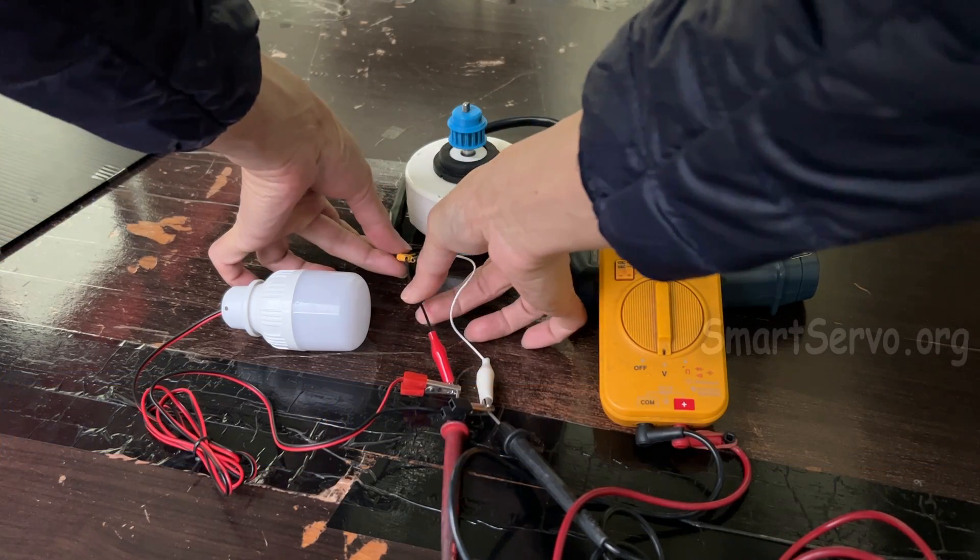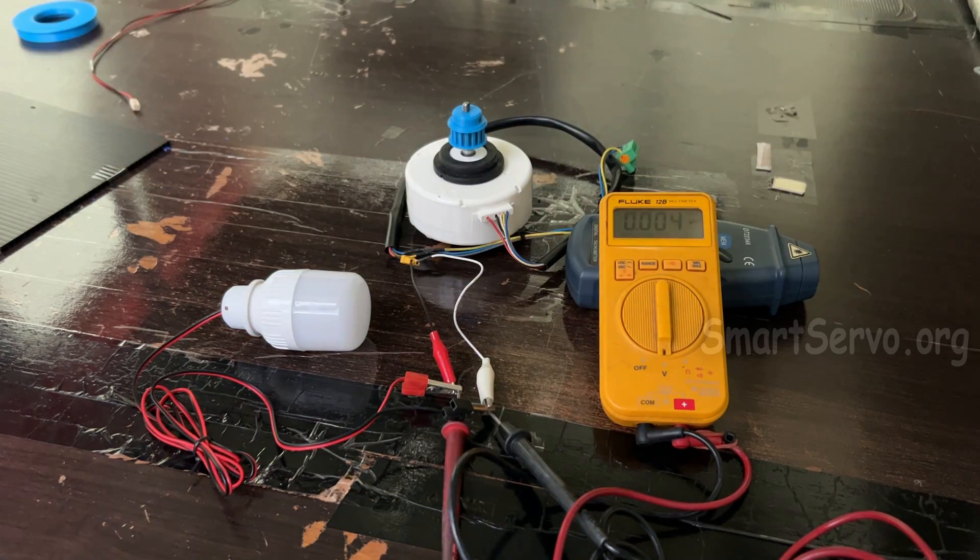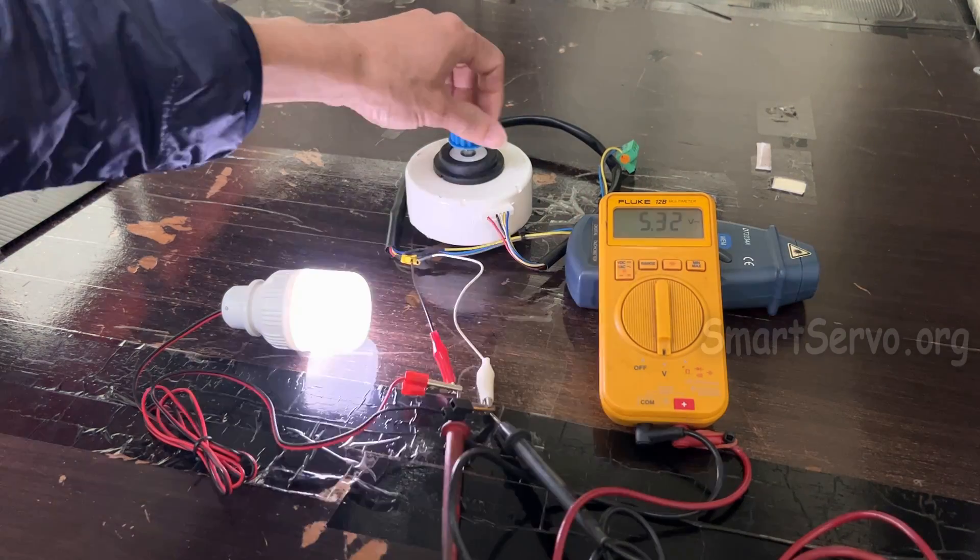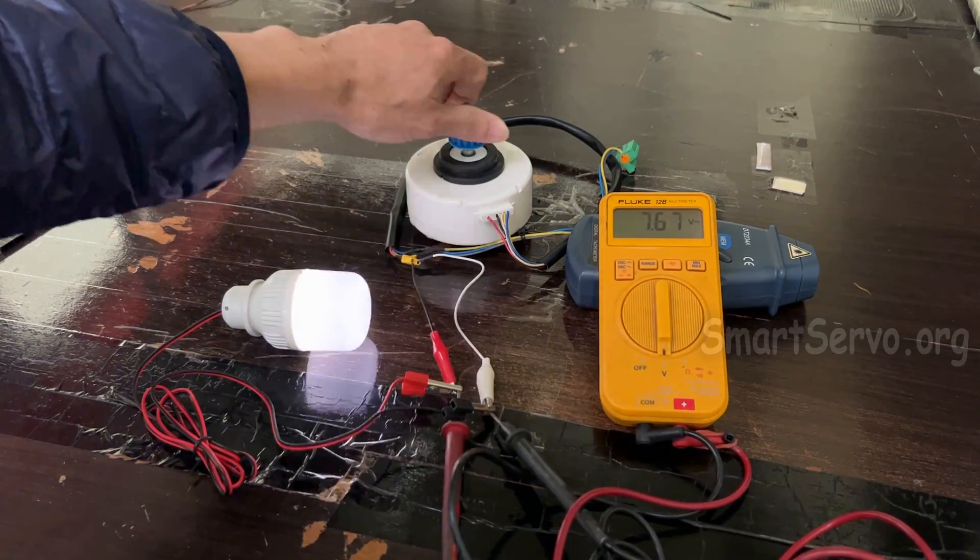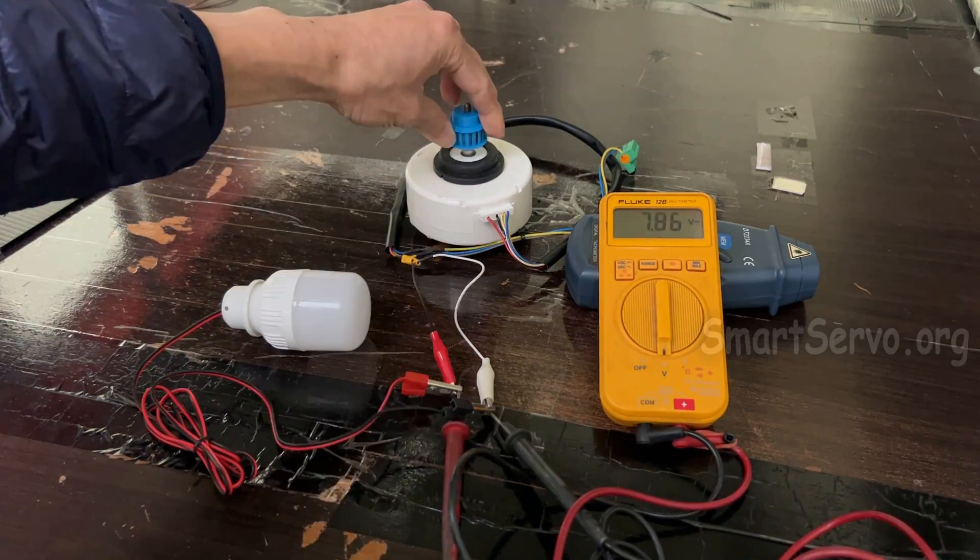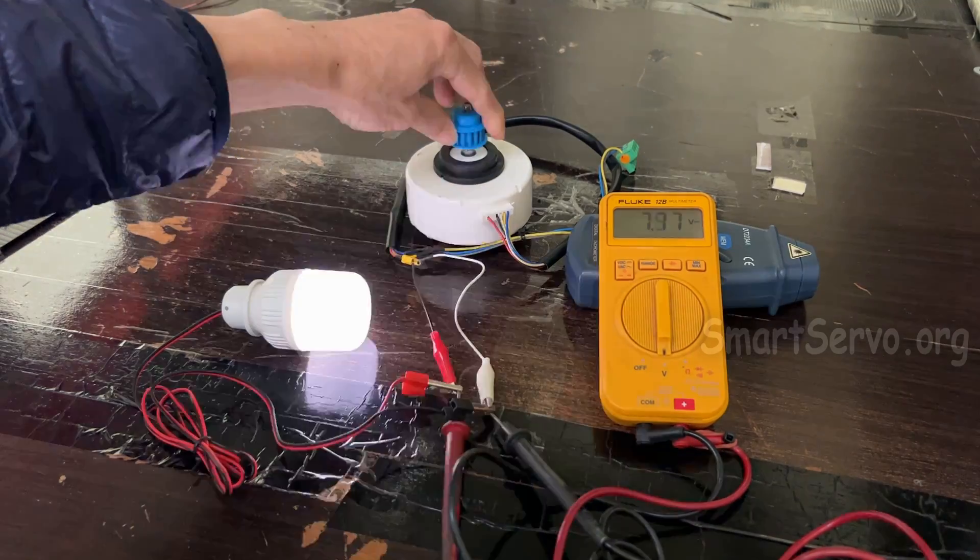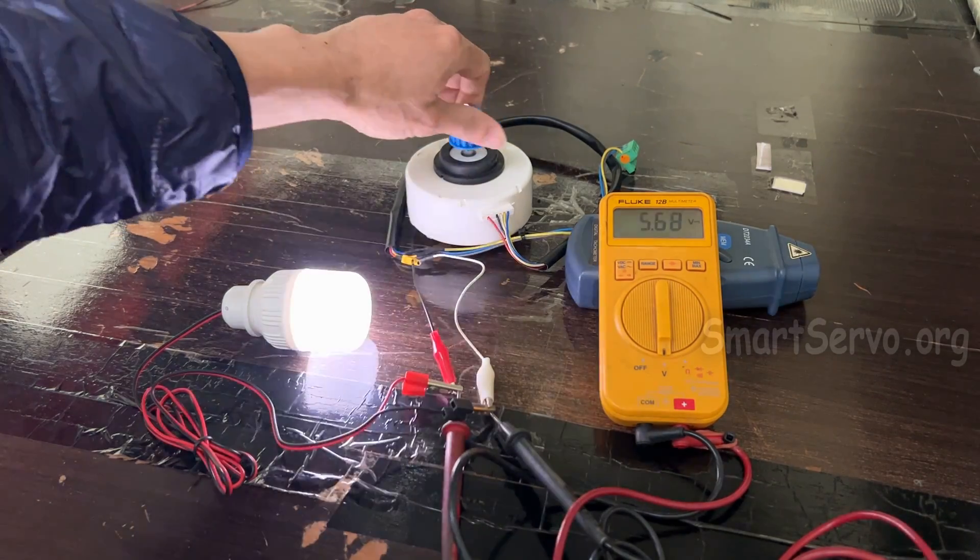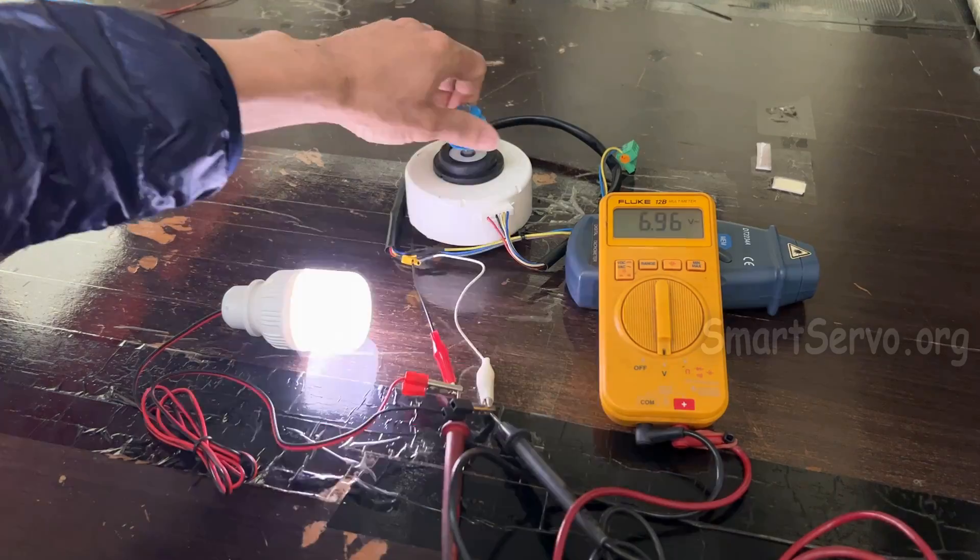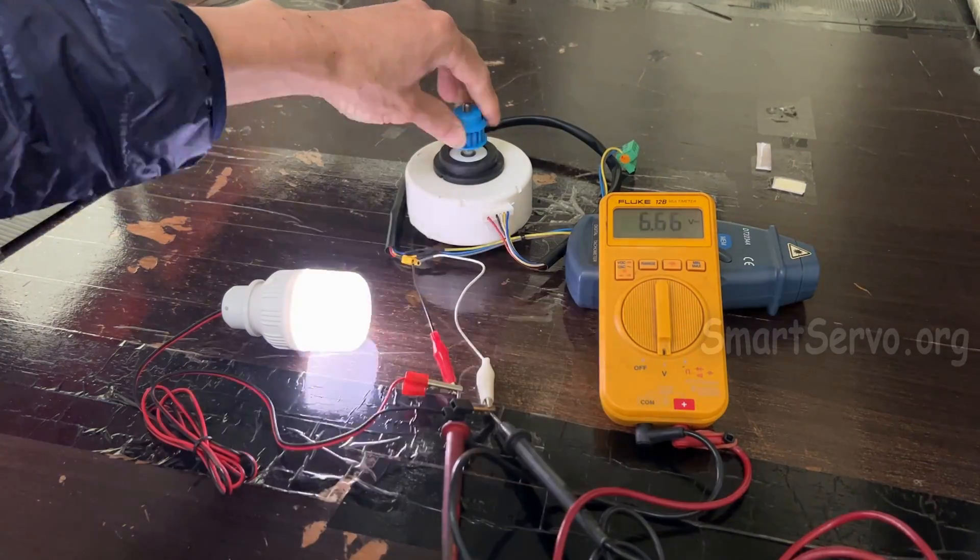Simply test the power generation, connect the LED bulb, turn it lightly and it will light up. Both forward and reverse rotation can generate electricity. And regardless of direction, positive electricity is output from VM. Therefore, rectification is not necessary when generating electricity.